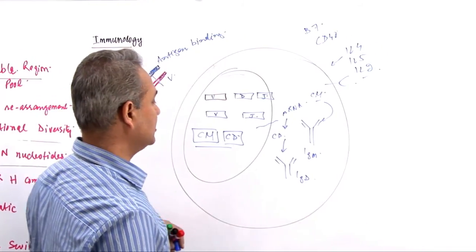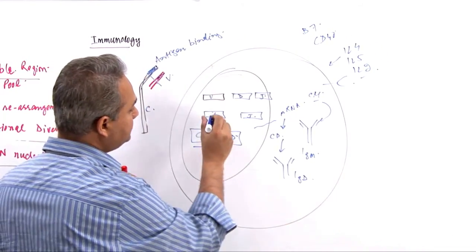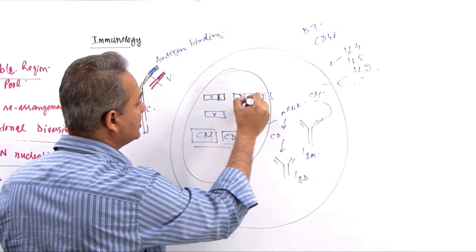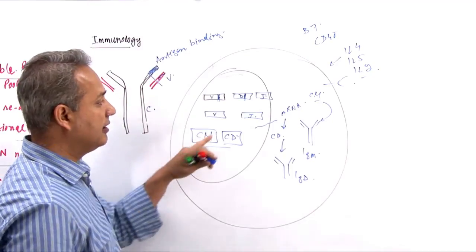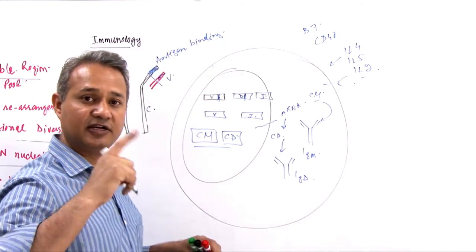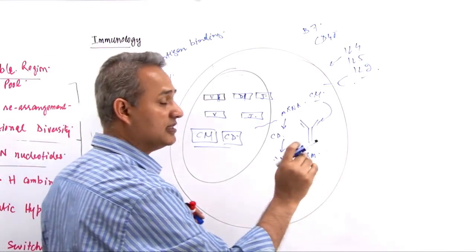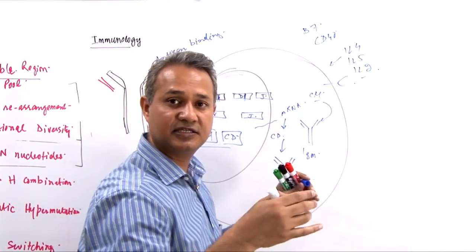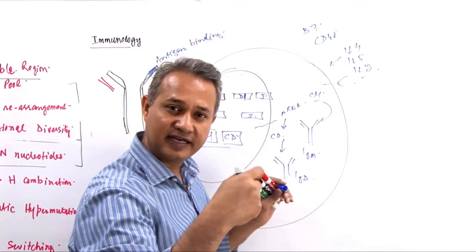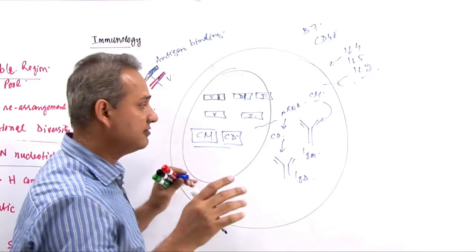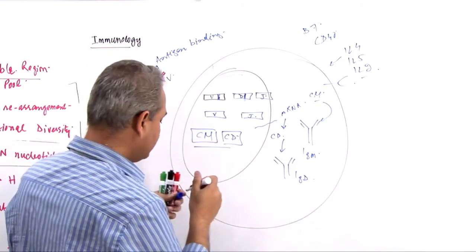And in that process, then the somatic hypermutation would start happening. What that means is there are going to be single base pair changes which would appear here. For these base pair changes, what we need is a follicular dendritic cell in the lymph node that has to actually connect with this, present the antigens, and let the B cell exercise itself on those antigens and keep having hypermutations. That is a very interesting story.